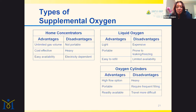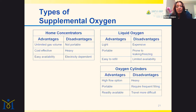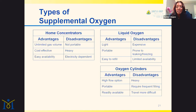Oxygen cylinders are compressed gas in a tank. They have high flow options, from 0.5 liters up to 12 to 15 liters depending on the system, and they're portable and readily available nationwide and worldwide. The disadvantages are that they're heavy, require frequent filling or delivery to your home, and can make traveling more difficult.